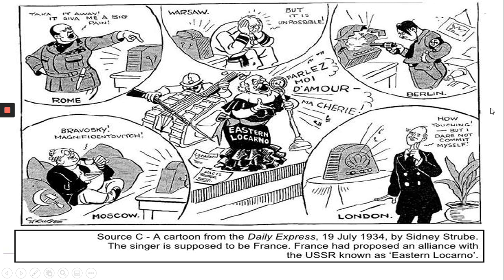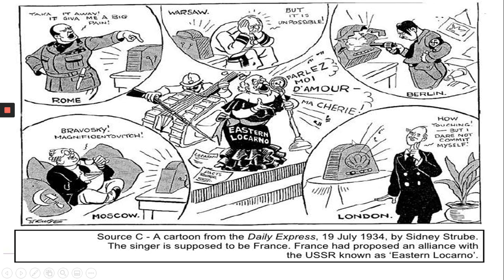And finally, we've got London. They say 'how touching, but I dare not commit myself.' So that shows Britain isolating themselves away — they think it's a good idea, but they're not getting involved because they don't want to commit. And we know Britain is having financial difficulties because of the Great Depression in the 1930s. However, this doesn't make them look good. So all around here are quite negative images, and they are mocking the League's ability to bring peace to the world. Overall, this is a negative source — most things here show that the League of Nations is not a good peacekeeper, and it's very derogatory in the language and pictures.